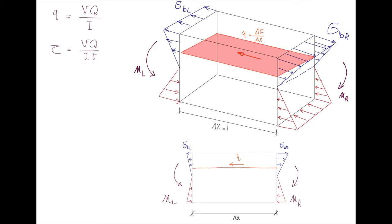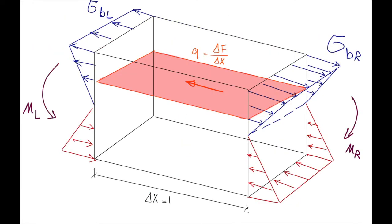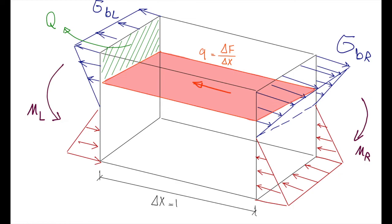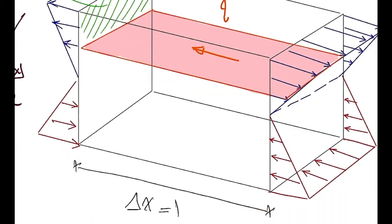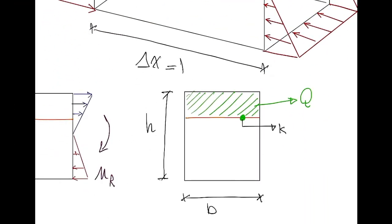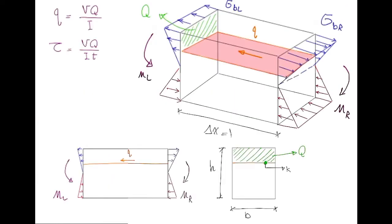In order to determine shear flow, we need to determine Q. The red area is where the shear flow acts and is used for determining shear stress. But for the first moment of area Q, I use the cross-section from the front view, shown in green. To determine shear stress at point A, we cut horizontally and consider the area above that point to determine Q.